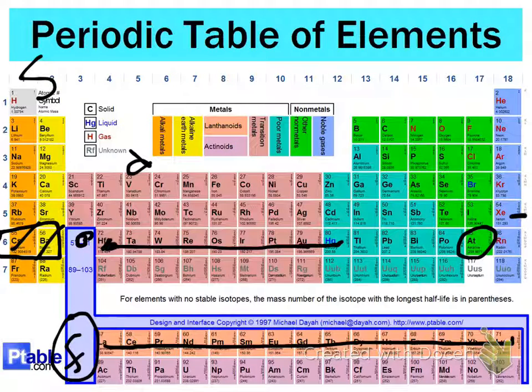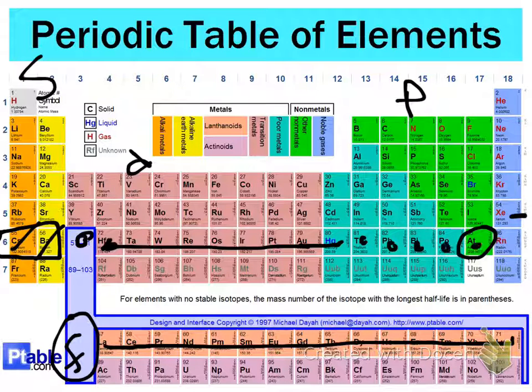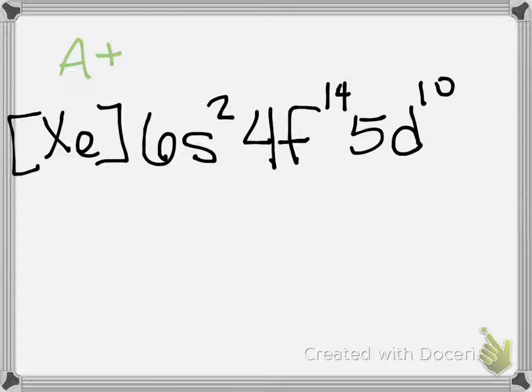And then we have to get through the P block. This is the P block. So we got one, two, three, four, five. The P block, the period matches the energy level. So we would go six P five.